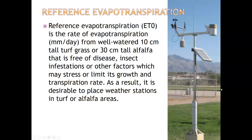Once reference ET is calculated for grass, it can be transferred to other crops using a crop coefficient. Scientists used lysimeters and similar studies - including work with Waiuli - to calculate the ratio between reference ET and crop ET across the entire growing season, producing a crop coefficient curve. When the crop is fully mature, the coefficient is about 1.0; early and late in the season it may be closer to 0.2 or 0.5.